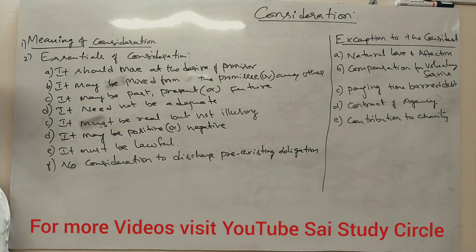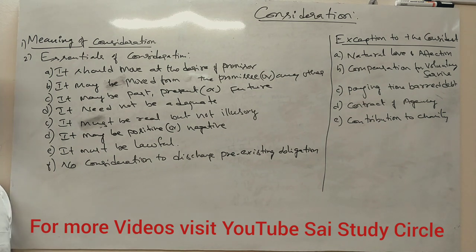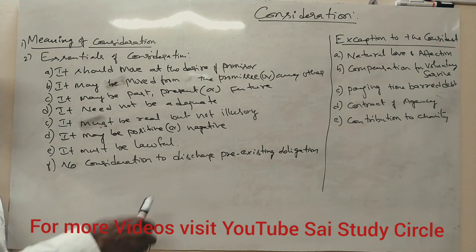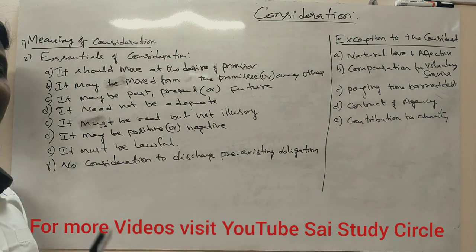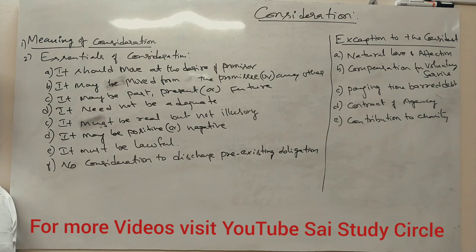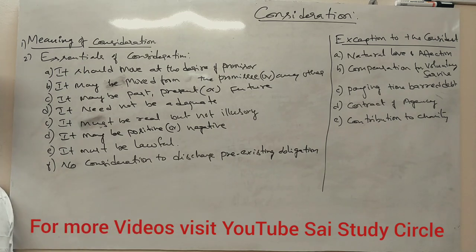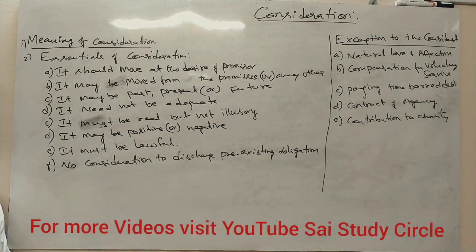Consideration may be present, past, or future. Past consideration means it was already given before the contract. Present consideration means you are paying something in return for goods or things you have accepted right now. Future consideration means, for example, a horse or car has already been delivered to you but the consideration will be given next week — that is future consideration.